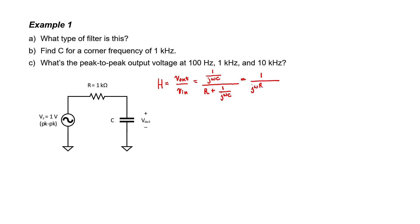From the transfer function, I can see that we don't have any zeros, but we have one pole. That's characteristic of a low-pass filter. I can also see by inspection that as the frequency gets higher and higher, the transfer function gets smaller and smaller. As the frequency approaches zero, the transfer function just approaches one.